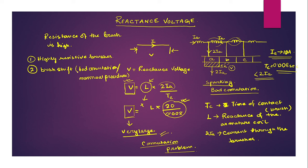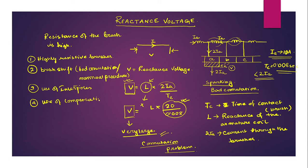Remedy number three is the use of interpoles, and remedy number four is the use of compensating windings. How interpoles and compensating windings reduce armature reaction is not covered in the lecture notes. If you want to know more about that, let me know in the comments section and I'll try to make a video on interpoles and compensating windings.